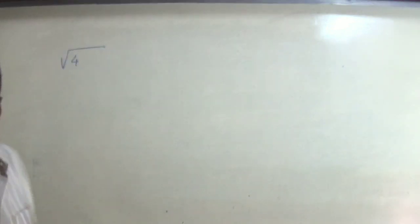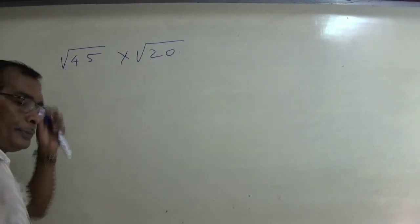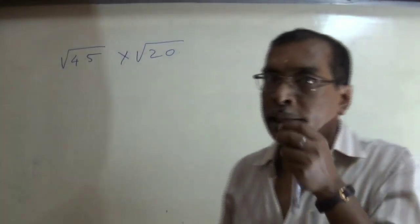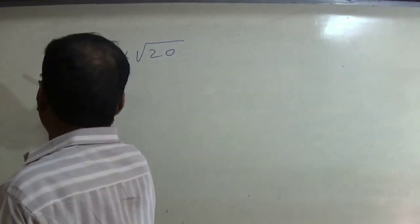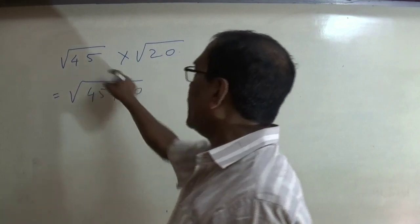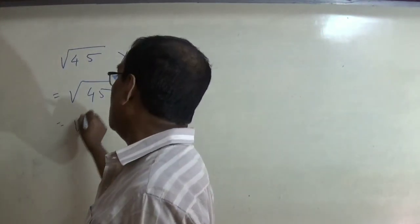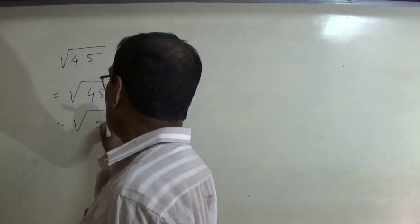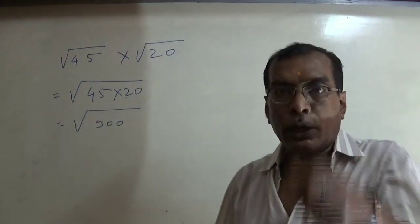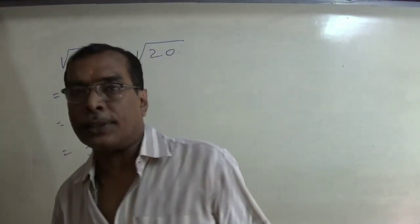The first question is: square root of 45 multiplied by square root of 30. Since a multiplication sign is there in between, we keep both under the same square root sign, giving us √(45 × 20). That equals √900, and 12 twos are 90 followed by one more zero — and you know very well the square root of 900 is 30. That will be our answer. Quite simple, isn't it?